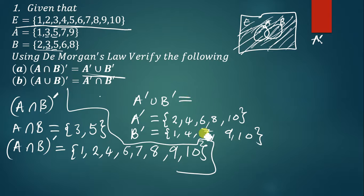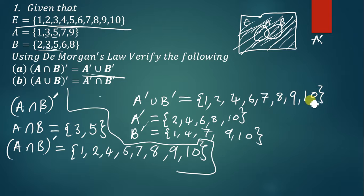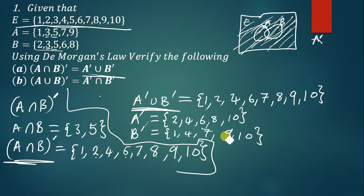Now to find A'∪B', we combine these two sets making sure elements present in both are written only once. We have: 1 from B', 2 from A', — no 3 — 4 appears in both so we write it once, — no 5 — 6 from A', 7 from B', 8 from A', 9 from B', 10 appears in both so we write it once. So A'∪B' = {1, 2, 4, 6, 7, 8, 9, 10}. Checking: this is the same as (A∩B)' = {1, 2, 4, 6, 7, 8, 9, 10}. Both sides are equal.